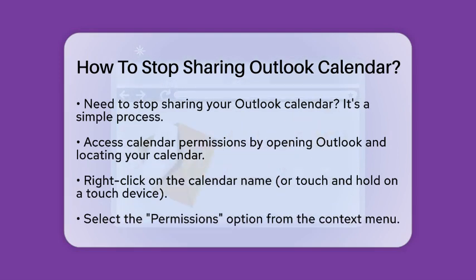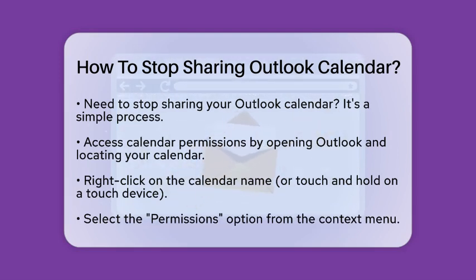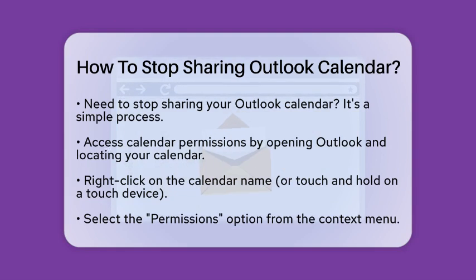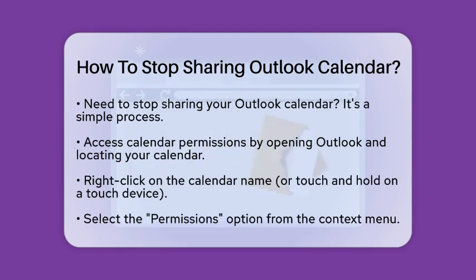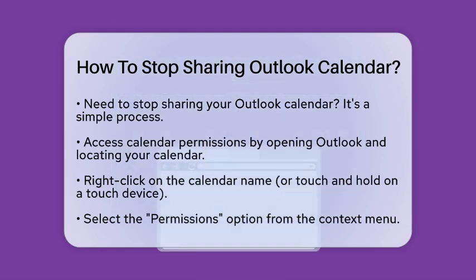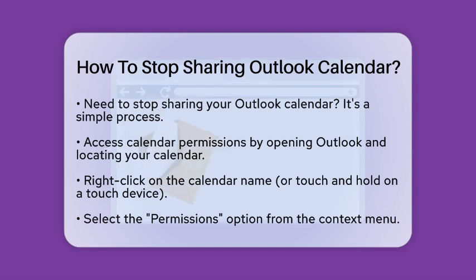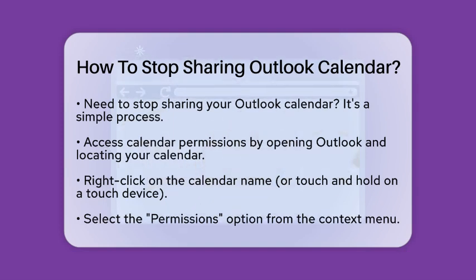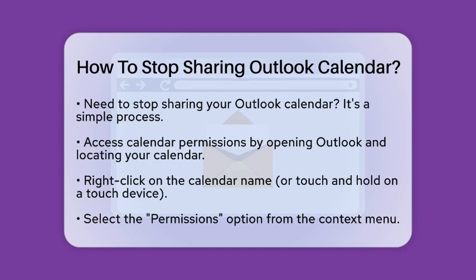First, you will need to access the calendar permissions. Open Outlook and locate the calendar you want to unshare. Right-click on the calendar name to bring up a menu. If you are using a touch device, touch and hold the calendar name instead.